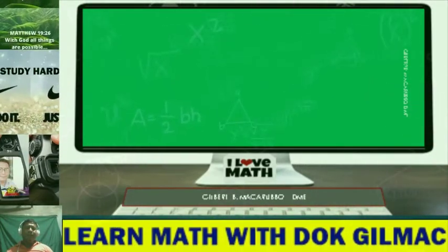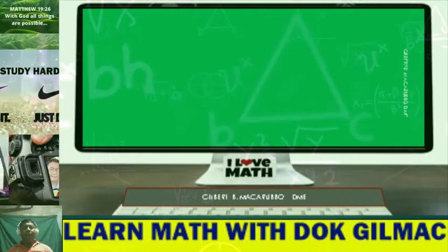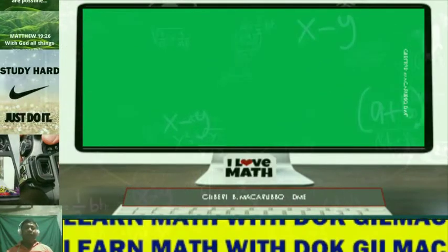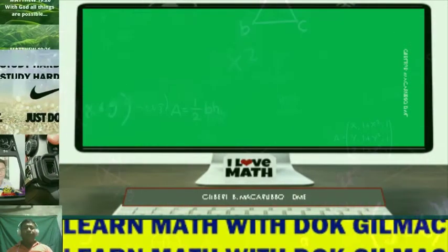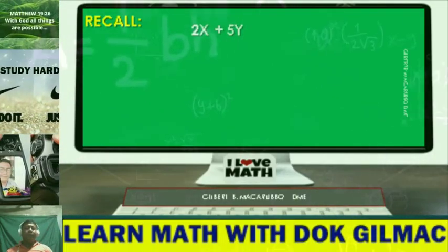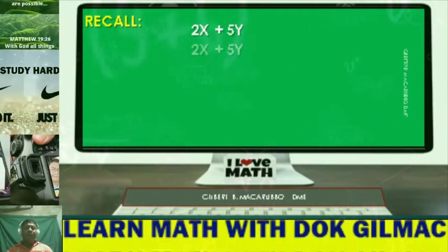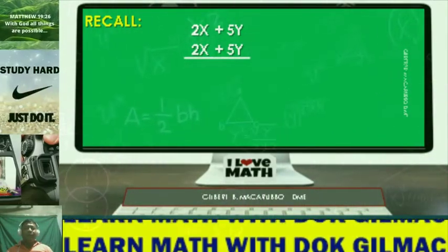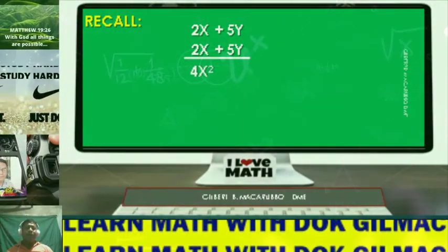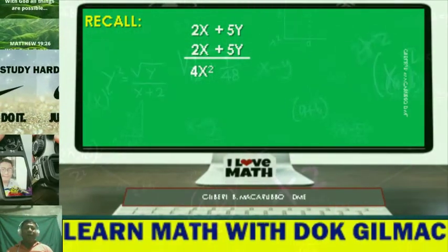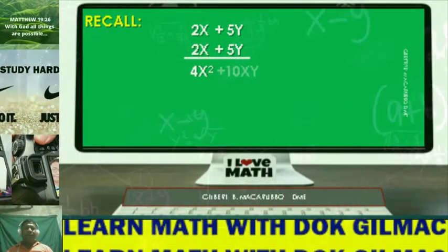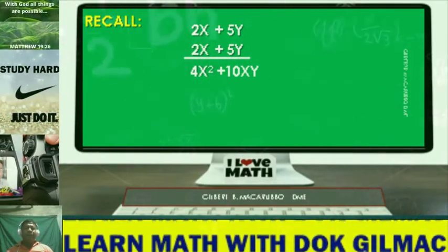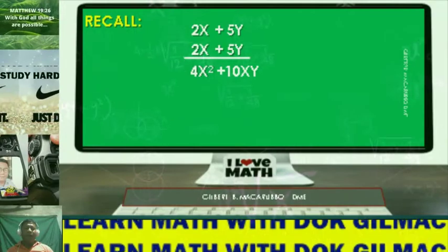Before discussing the product of square of binomial, let's recall first the multiplication of two binomials using the vertical method. Consider 2x plus 5y times 2x plus 5y. 2x times 2x is just equal to 4x squared. 2x times 5y is just equal to 10xy. So we have plus 10xy. 5y times 2x is equal to 10xy. You align it.